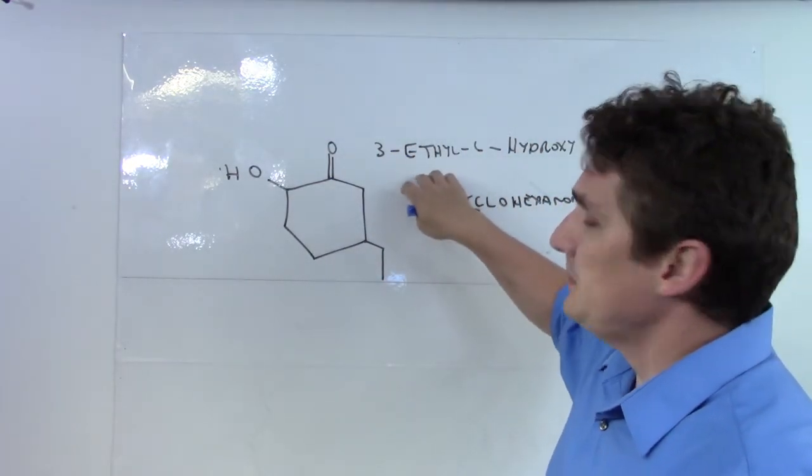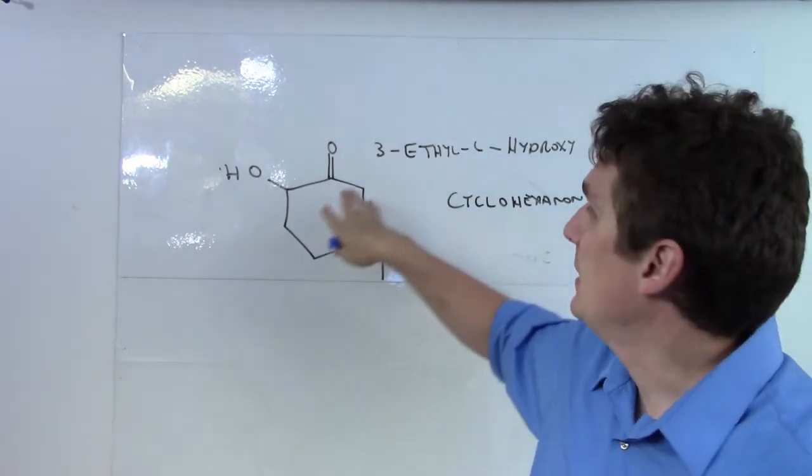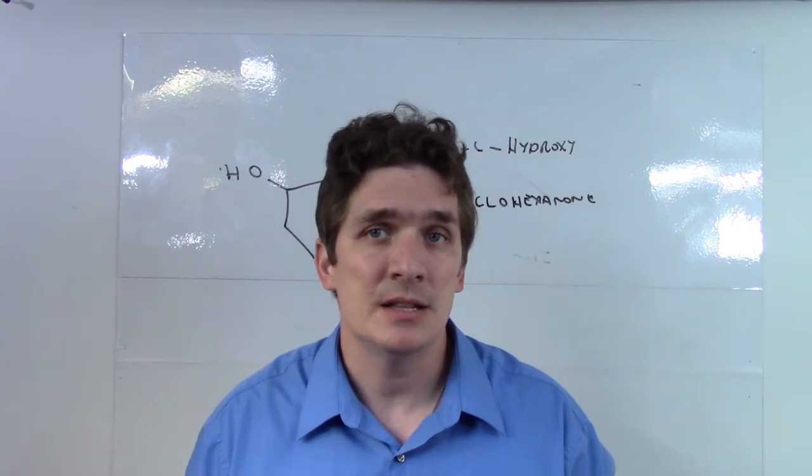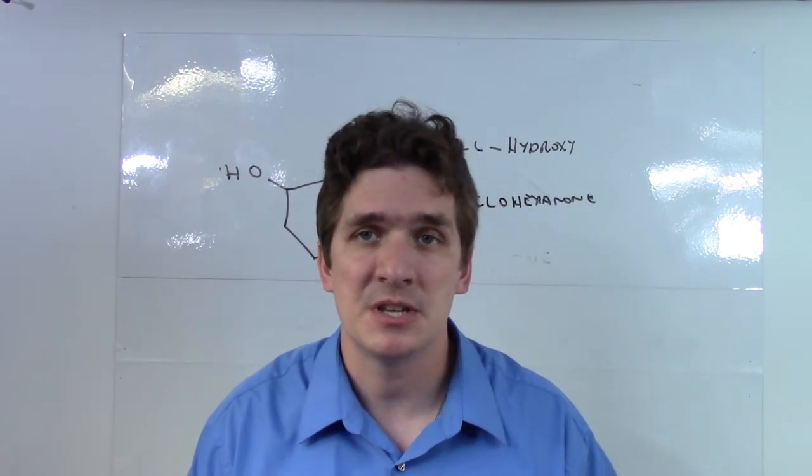When you go to name, write out the groups on the ring, and then you want to minimize the difference at the first position in the naming. And that's how you name cycloketones.